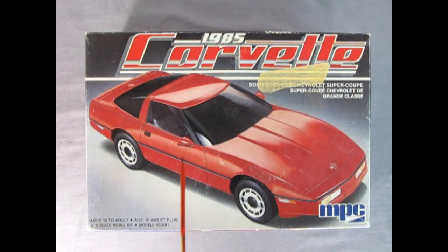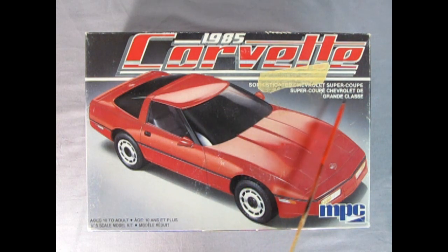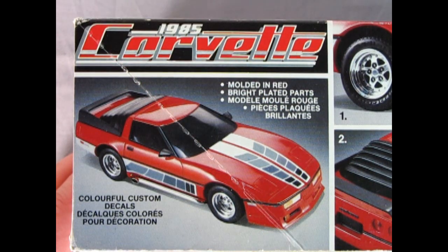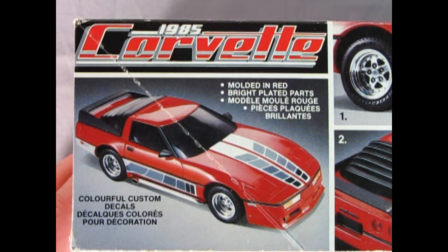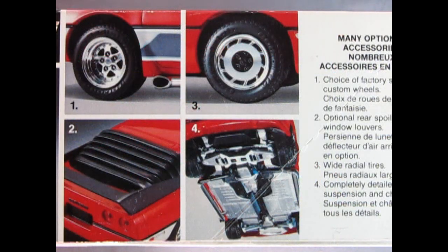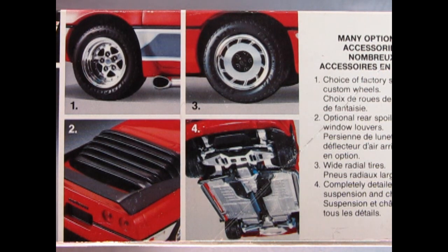We also got this amazing 1985 Chevrolet Corvette, a sophisticated Chevrolet Super Coupe by MPC. For ages 10 to adult, it's a 1/25th scale model kit. As we look on the side of the box, we see that they have both English and French. Our model kit is molded in red with bright plated parts and colorful custom decals.